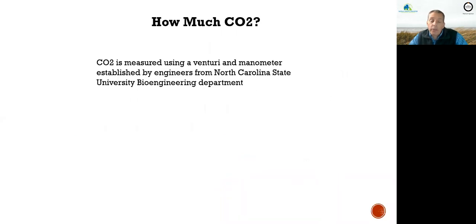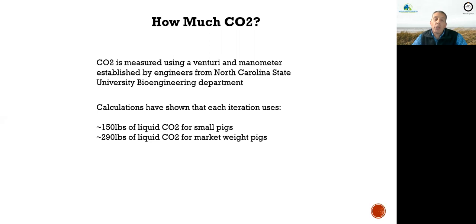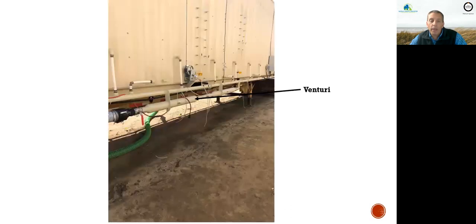The CO2 is measured using a venturi manometer established with our friends from the North Carolina State University bioengineering department. Our calculations show that for smaller pigs it's about 150 pounds of liquid CO2, and for larger ones up to 290 pounds of liquid CO2. Here is the venturi on the outside of our container — the vapor comes in here, goes through the venturi, and we have a manometer connected to it so we can measure the CO2 flow to meet the guidelines.